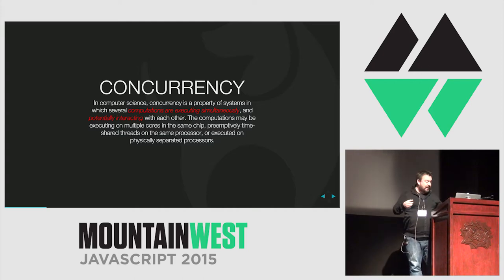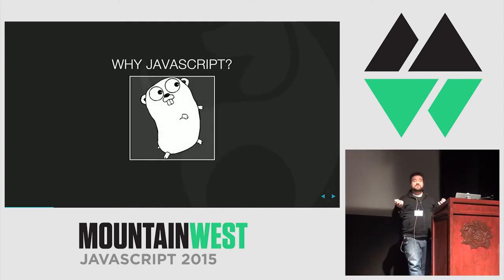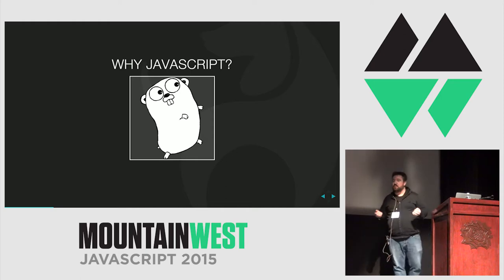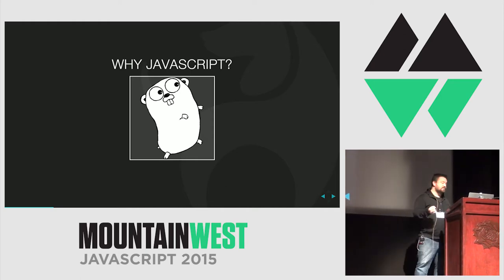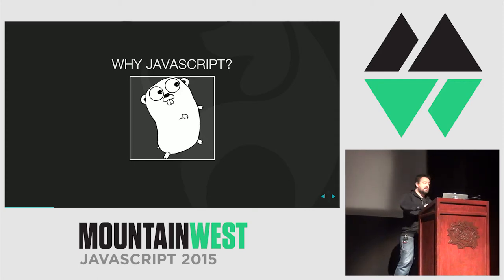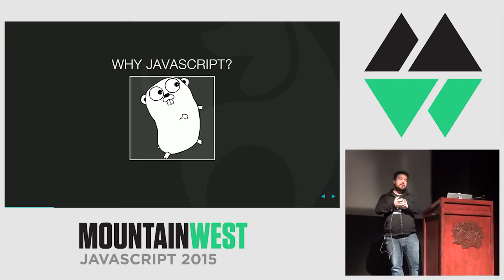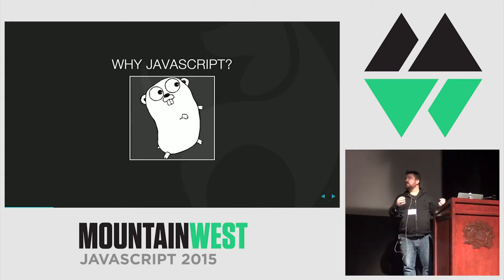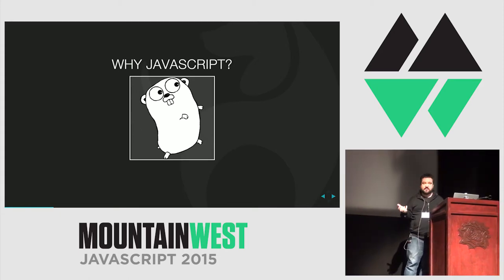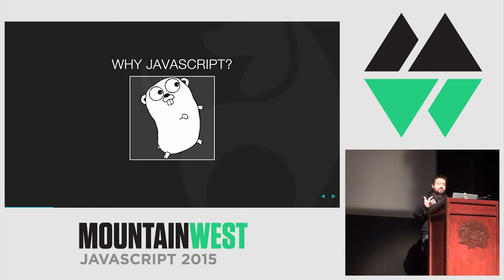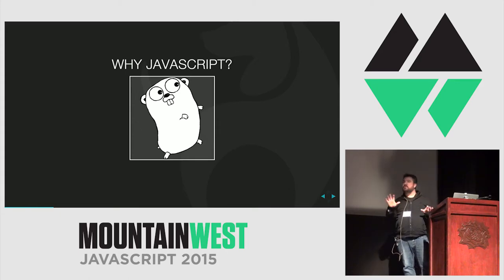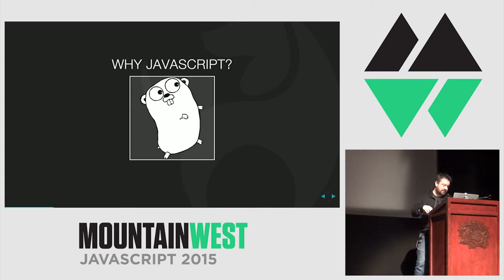With that being said, the first question I get asked is: why JavaScript? Of all the languages out there, why would we pick JavaScript? There's Go, there's Ruby, there's C#, there's Python, there's Haskell. There are a lot of languages that have much richer concurrency primitives built into them. With any real tech decision, there's a little backstory to explain why we made this choice.